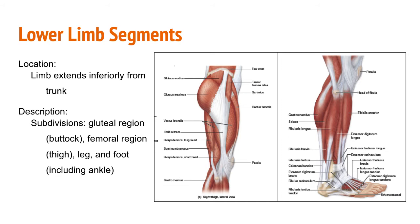The lower limb muscles are all different muscles than those of the upper limb. Some muscles you may recall are the gluteus maximus, medius and minimus, quadriceps, hamstrings, and gastrocnemius. The lower limb muscles support more weight than the arm, as evidenced by the four tendons attached to the quadriceps compared to the biceps in the upper limb.